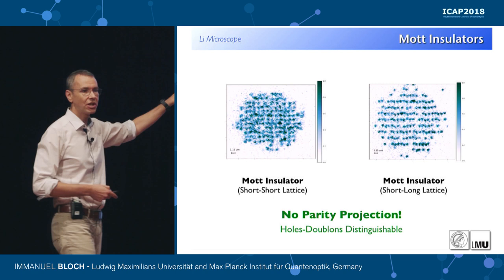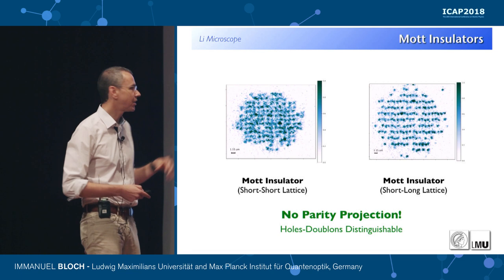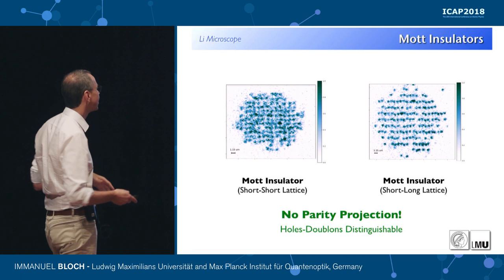In this experiment we see all the particles — there is no parity projection, so we faithfully see when there is one atom, two atoms, or zero atoms. But we do not yet see where the spins are, and that is what we really would like to see as well in the experiment.